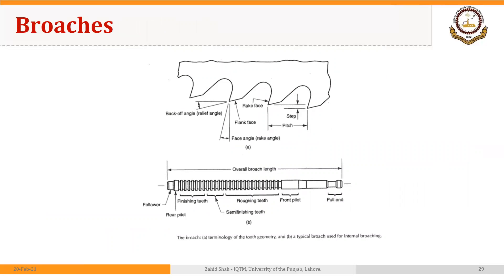Another example is broaching. Broaching is also a multiple-edge cutting tool — we have a series of cutting edges. We have teeth in different sizes: roughing teeth and finishing teeth. The size of the teeth increases as we move from roughing teeth to finishing teeth. If we focus on one tooth, its geometry is very similar to a single point cutting tool. You could see the rake face, which has a rake angle, then the flank face, and a relief angle very similar to the end relief angle in a single point cutting tool.